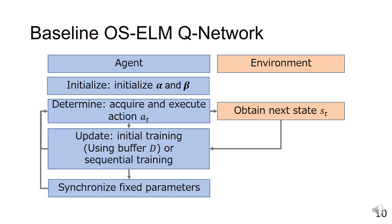The initialize operation initializes α and β, and the determine operation acquires and executes actions. In update operation, initial learning is performed when the number of data reaches the number of hidden layer nodes. After that, sequential learning is performed when new data comes.